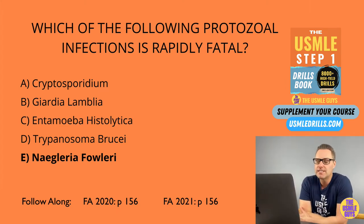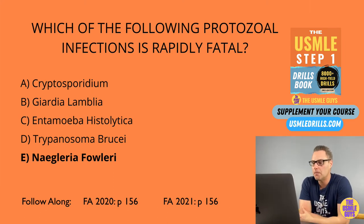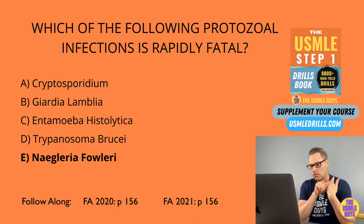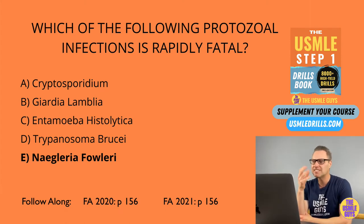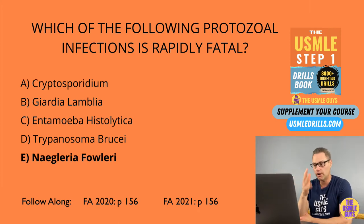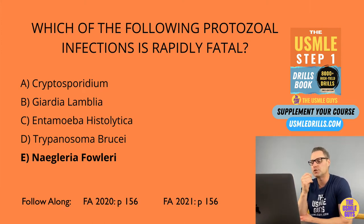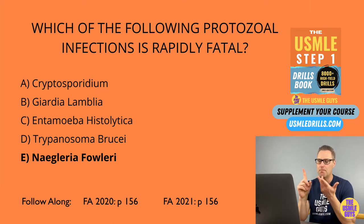Next up, we have Toxoplasma gondii. This is transmitted by cysts in meat as well as oocysts in cat feces. That is why pregnant women should be cautious about cleaning cat litter, because it can cross the placenta and lead to congenital toxoplasmosis, characterized by the classic triad of chorioretinitis, hydrocephalus, and intracranial calcifications. In immunocompetent patients, this looks similar to mononucleosis but with a negative heterophile antibody test. Those with AIDS can demonstrate multiple ring-enhancing lesions on MRI. Diagnosis is made with serology or by identification of the tachyzoite on biopsy. Treatment is a combination of sulfadiazine and pyrimethamine.